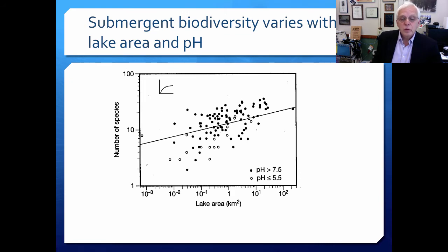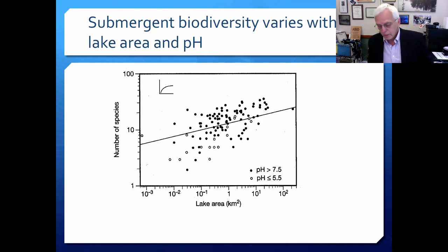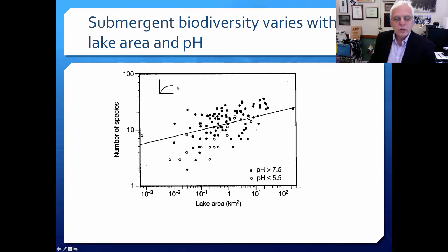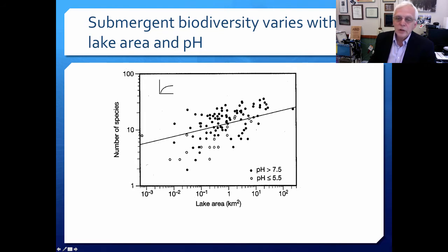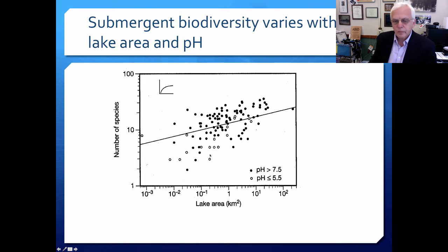Submergent biodiversity varies with a variety of factors. This graph illustrates how lake area and pH have an effect. In the previous slide, there seem to be fewer species in that lake with brown water — those tend to be low pH ecosystems. As lake area increases, the number of species rises fairly rapidly on this logarithmic graph. You may have up to 40 species in some of these higher pH lakes that are very large. One of the lakes I study has 22 species of aquatic plants — it's a relatively large lake with a moderate and stable pH level. Low pH would be more bog-like lakes, and pH has major physiological effects on plants.